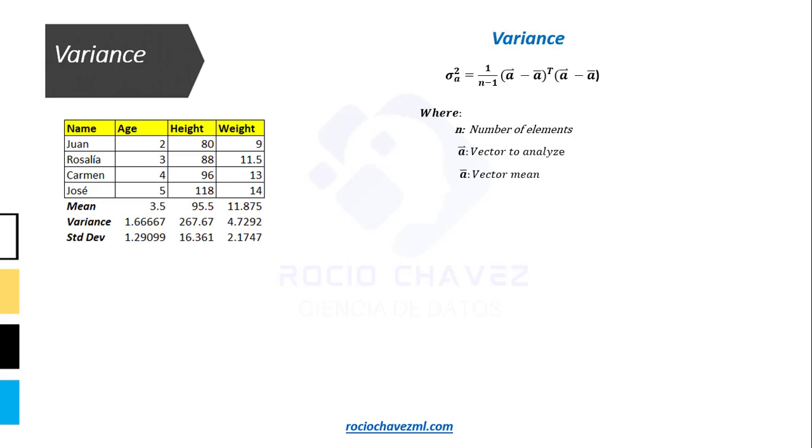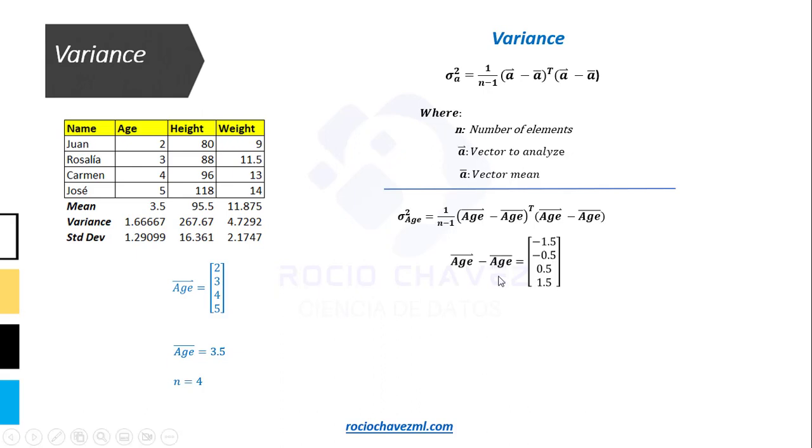This is the formula for calculating the variance, where n is the number of elements of rows, a arrow is the set of values of the variable being analyzed, and a bar is the average value of the variable. Let's obtain the variance of each variable, whose vector is formed by the values 2, 3, 4, and 5. The average is 3.5, and the number of elements is 4. We then have that the age vector minus the average of the age variable results in a vector whose elements are minus 1.5, minus 0.5, 0.5, and 1.5. If we substitute these values into the formula, we see that the variance of the age variable is 1.66, which is the same as the value obtained in Excel.